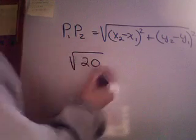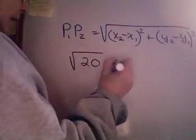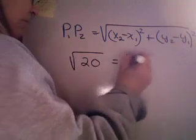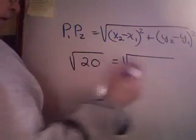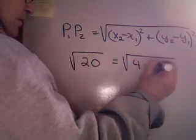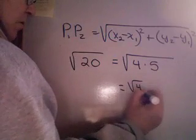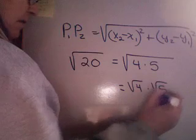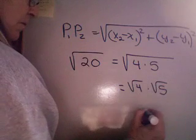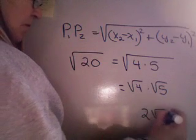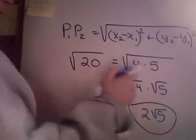So, simplifying the root 20. Again, break it up into perfect square numbers if you can. 20 could be broken up to 4 times 5, which could be written as square root of 4 times square root of 5. Do I know the square root of 4? Oh yeah, that's 2.